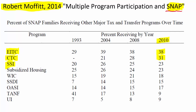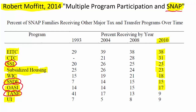Temporary Assistance for Needy Families is a cash program, as are SSDI and OASDI — these are likely counted in cash payments. But housing subsidies and nutrition programs are likely not counted. Eligibility for many of these benefits is tied to whether you're near the poverty line. The SNAP program is for any family below 130% of the poverty line; Medicaid is for families below 138%.